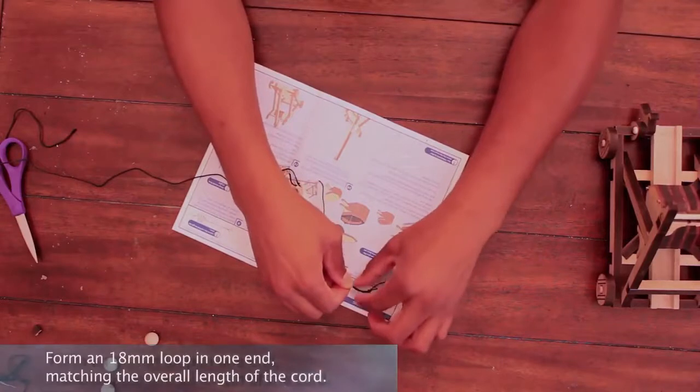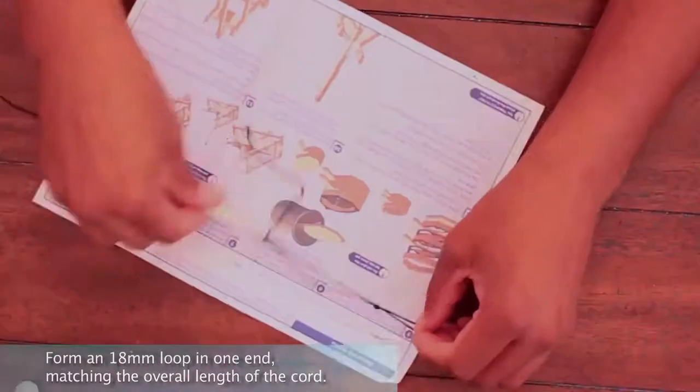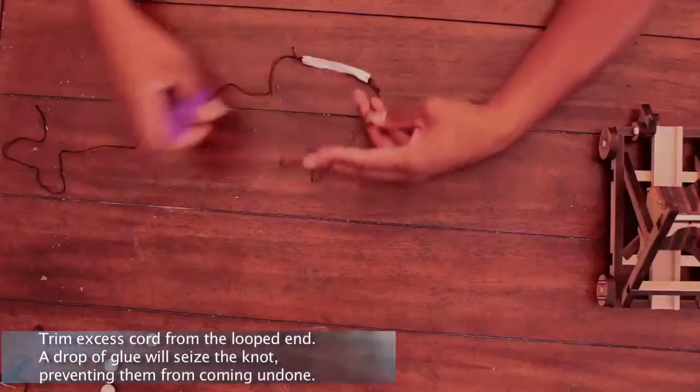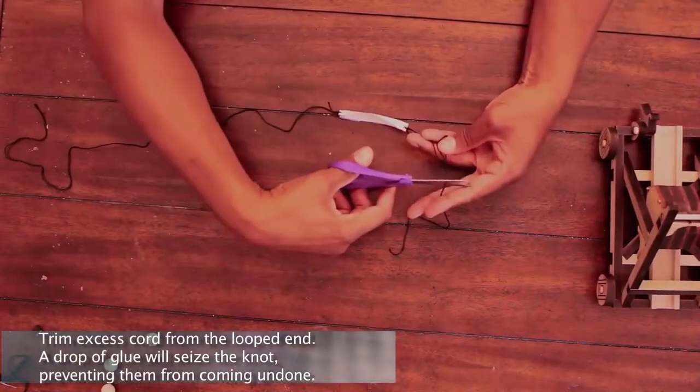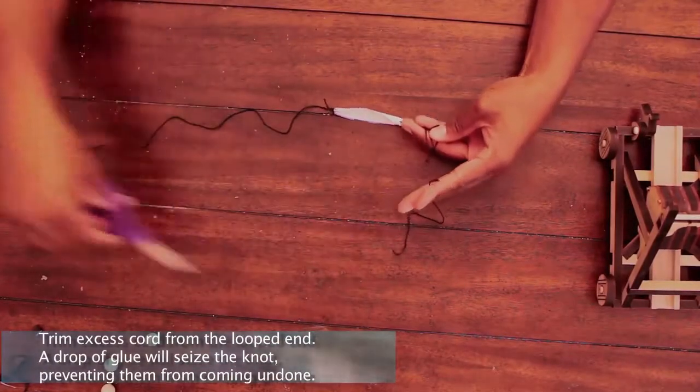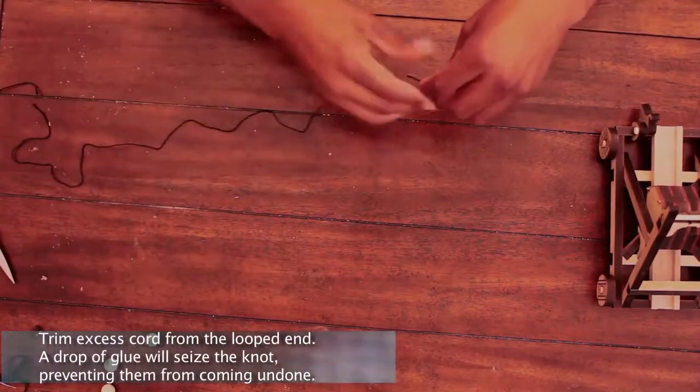Form an 18mm loop in one end, matching the overall length of the cord. Trim any excess cord from the looped end. A drop of glue will seize the knots, preventing them from coming undone.